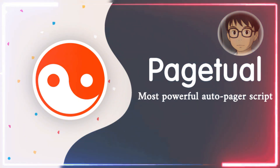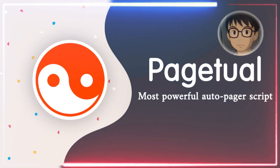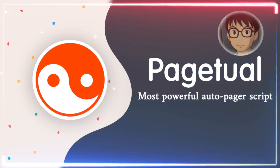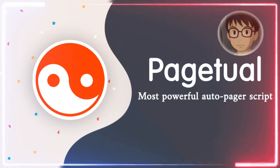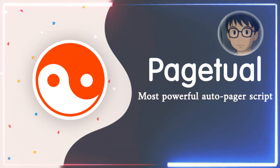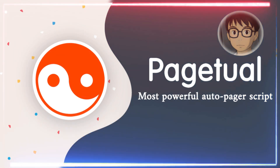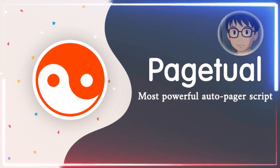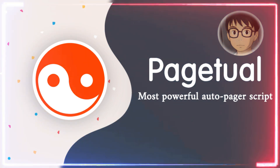Creating your own rules — sometimes you might want to create your own rules, and that's totally fine. The Pajetual element picker makes this super easy. Pajetual looks for the next page button, follows that link, grabs the content you want, and adds it to your current page. To make this work, you just need to tell Pajetual two things: where to find the next page button — we call this the next link — and what content to grab.